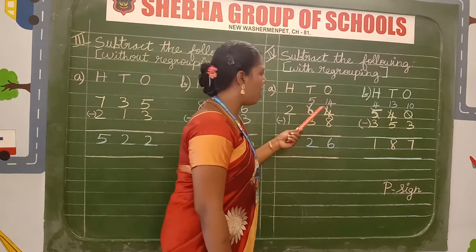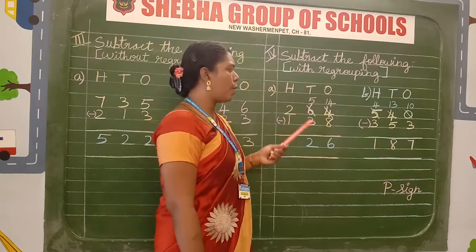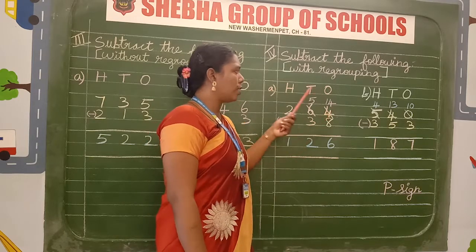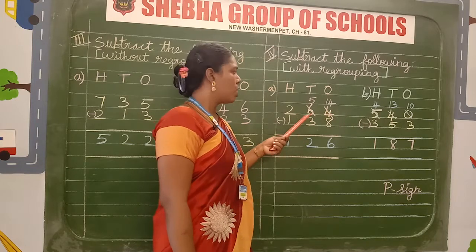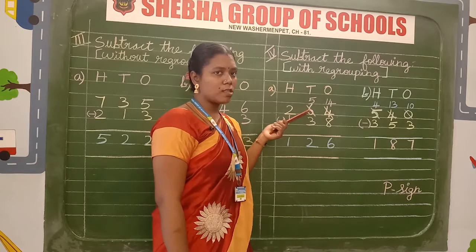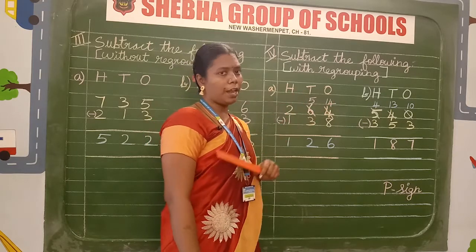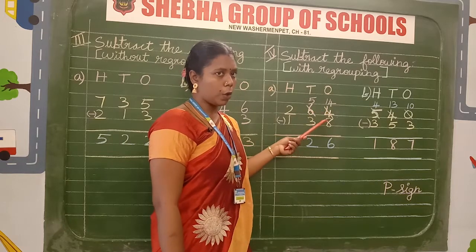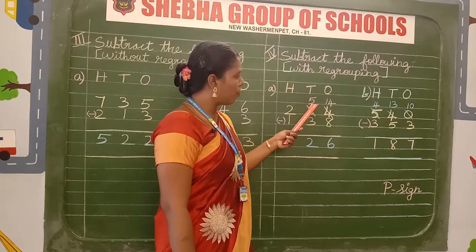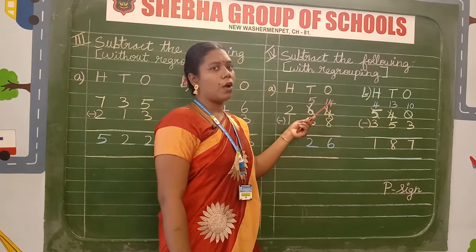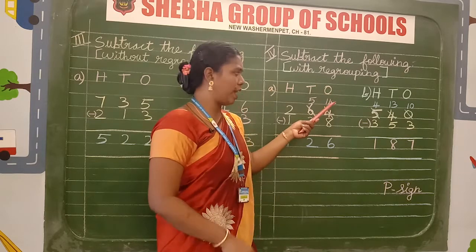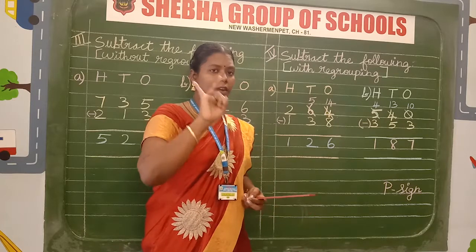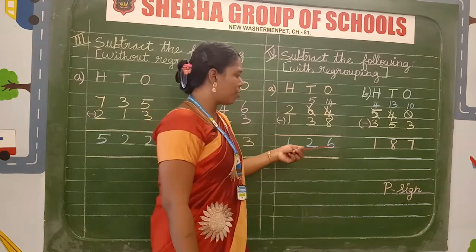Now subtract: 4 minus 8. You cannot subtract because 4 is a smaller number. So you have to borrow from the tens place value. The tens digit 6 becomes 5, and 4 becomes 14 — because ten plus four equals fourteen. Now 14 minus 8: keep 14 in mind, count up from 8: nine, ten, eleven, twelve, thirteen, fourteen — the answer is 6. Next: 5 minus 3: answer is 2. And 2 minus 1: answer is 1. This is the with regrouping method.